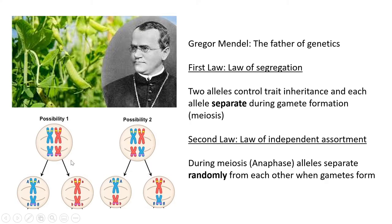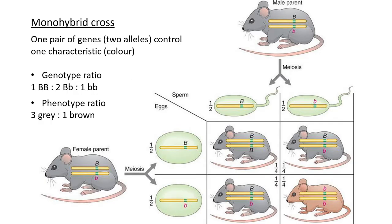The second law is called the Law of Independent Assortment. During meiosis, specifically anaphase, chromosomes separate randomly. There are two possibilities for how chromosomes align, but it is completely random - nothing determines which way it will happen. So while the Law of Segregation says alleles separate into different gametes, the Law of Independent Assortment emphasizes that this separation is completely random.